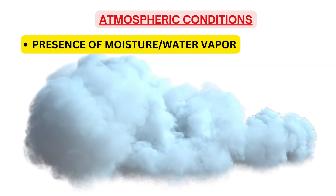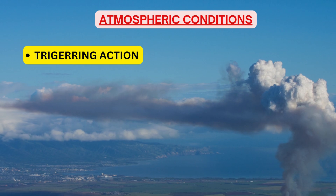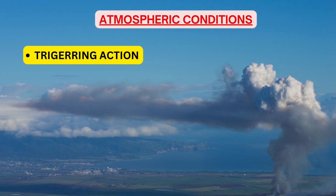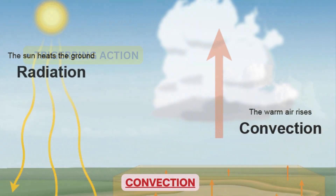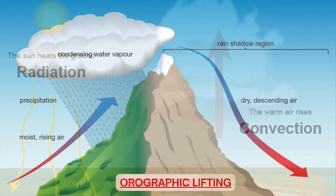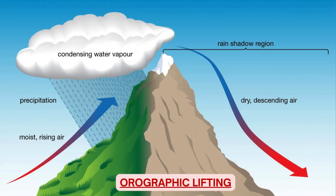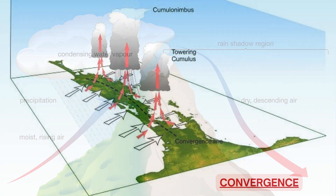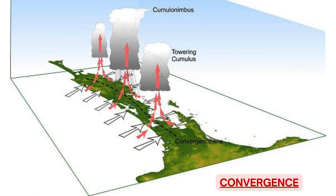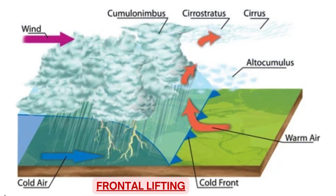The second condition is the presence of moisture or water vapor, which helps in formation of cloud. The last is a triggering action, which gives the initial push to warm moist air to rise. Triggering action can be any of four forces: convection, orographic lifting, convergence, or frontal lifting. You can appreciate the triggering action with the help of the diagram on screen. All of them result in the initial rise of moist air, which due to a deep layer of instability keeps rising to higher and higher altitudes, well above freezing levels.